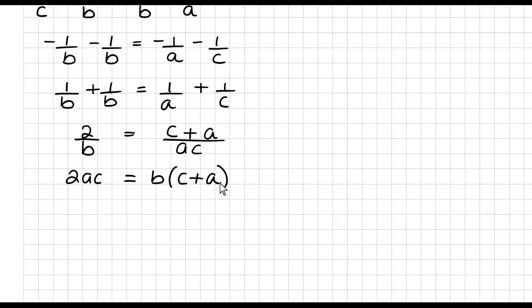Now, I'm not going to distribute this by multiplication, because I want the b on its own. So I'm going to say that 2ac over a plus c, just to keep it in alphabetical order, is equal to b.